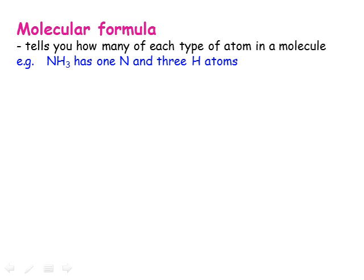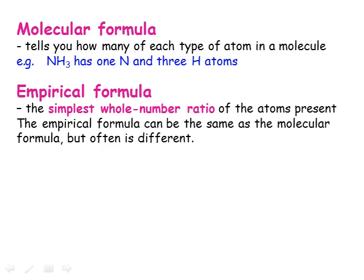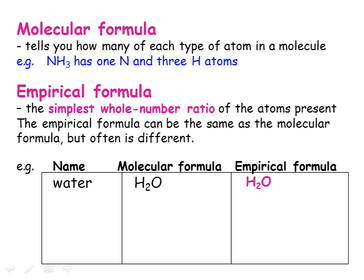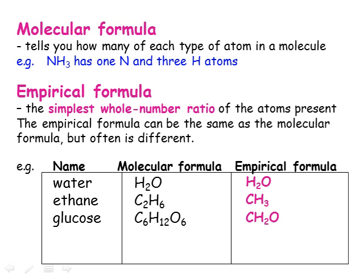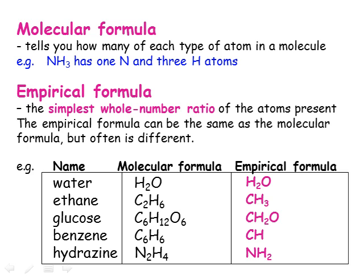The kind of chemical formula we are familiar with tells us which atoms are in the substance and how many of each — this is called a molecular formula. One of the simplest kinds of chemical formula is called the empirical formula, which tells us only which types of atoms are present and in what ratio to one another. For some substances such as water, this will be the same as the molecular formula. But for any substance where all the numbers in the molecular formula can be divided by something, the empirical formula will be different. Ethane has two carbon atoms and six hydrogen atoms — both divide by two, so the empirical formula for ethane is CH3. Similarly, C6H12O6 of glucose becomes CH2O, benzene becomes just CH, and hydrazine NH2.